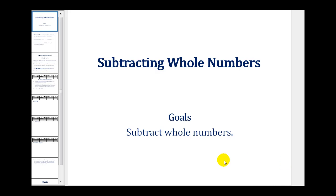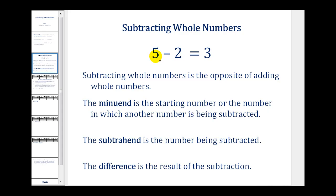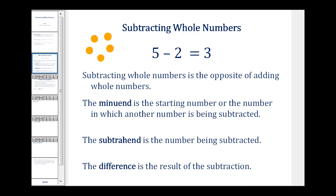Welcome to a lesson on subtracting whole numbers. Here's a straightforward subtraction problem involving two whole numbers: five minus two equals three. To model this, if we have five items and we take away two of them, we're left with one, two, three items. So five minus two is equal to three.